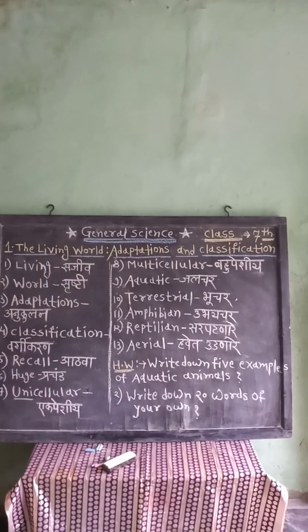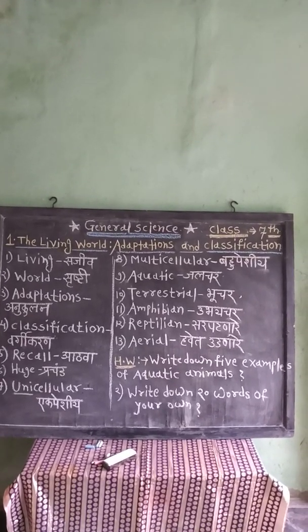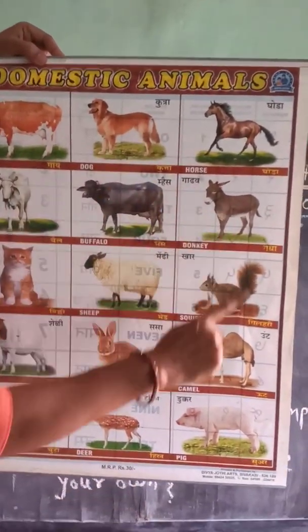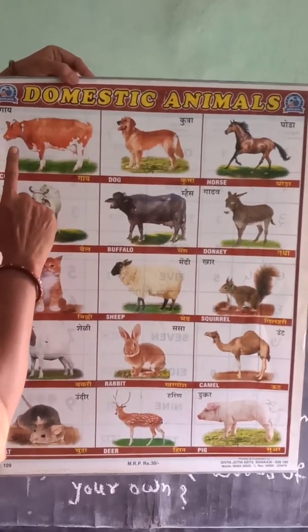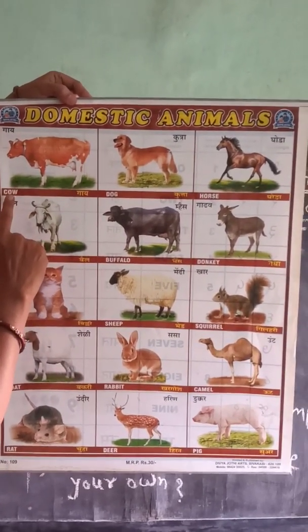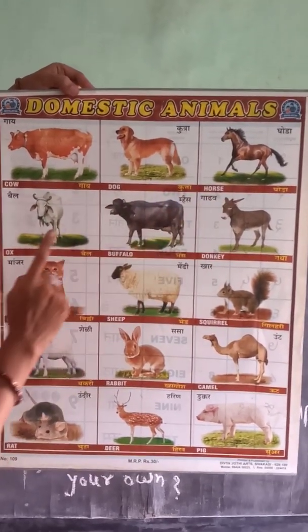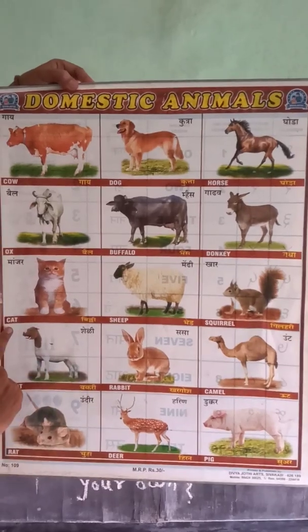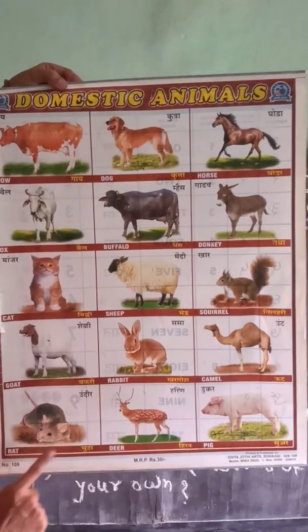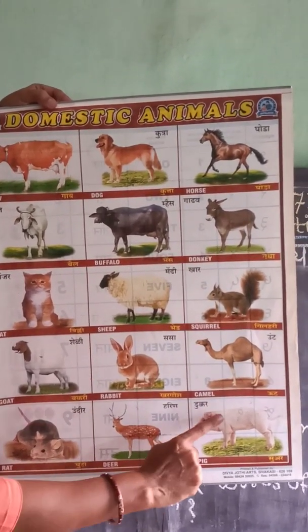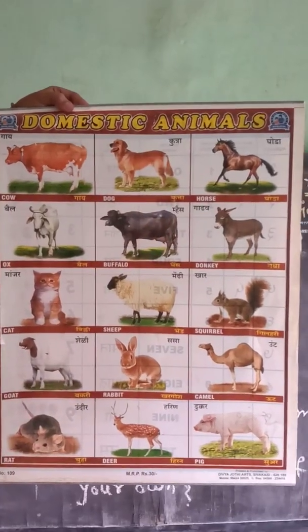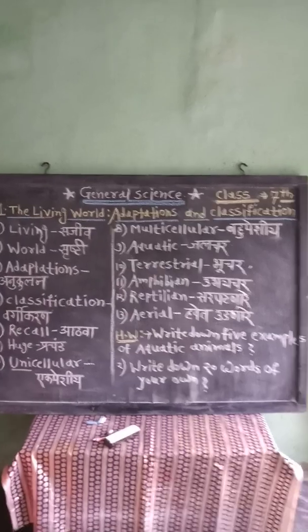Look at this chart — different types of animals. This world is full of a variety of animals. Examples of domestic animals include: cow, dog, horse, ox, buffalo, donkey, cat, sheep, squirrel, goat, rabbit, camel, rat, deer, and pig.